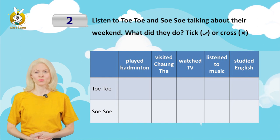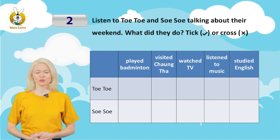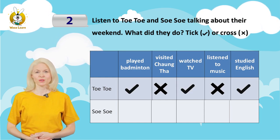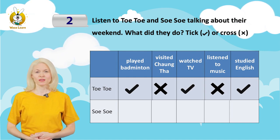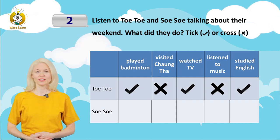Two. Listen to Dodo and Soso talking about their weekend. What did they do? Tick or cross? Dodo: Last week, I played badminton with Swante. I watched TV on Saturday night. I studied English on Sunday night.